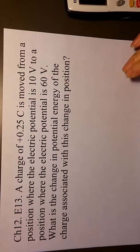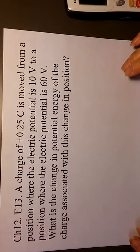Let's solve chapter 12 E13. A charge of 0.25 coulomb is moved from a position where the electric potential is 10 volt to a position where the electric potential is 60 volt.